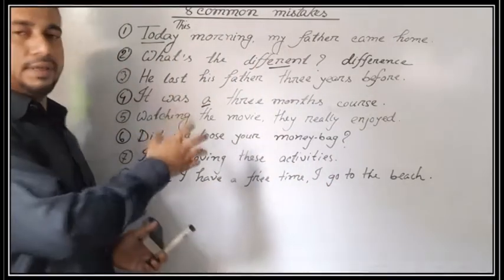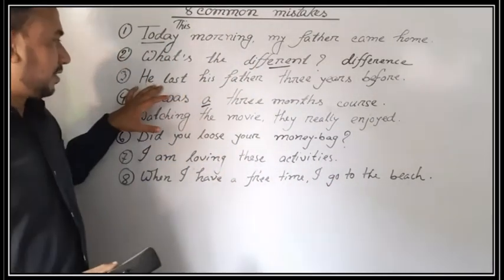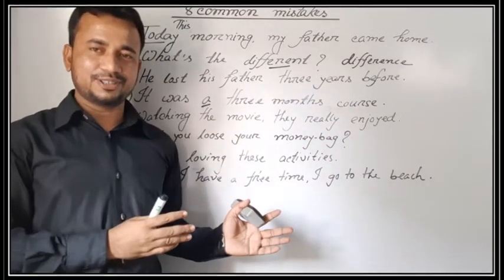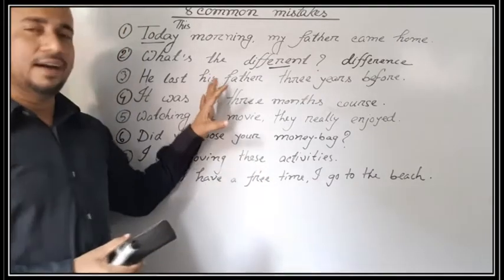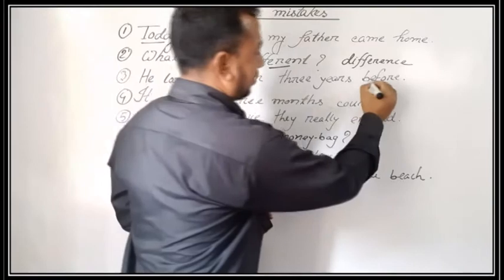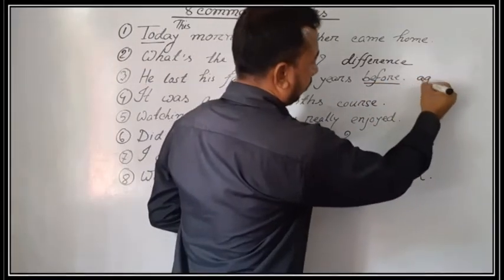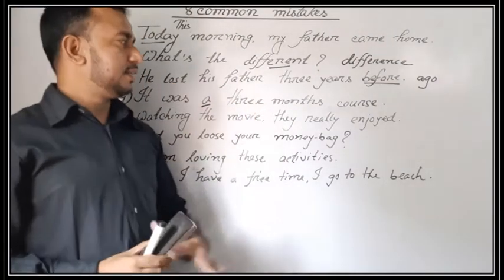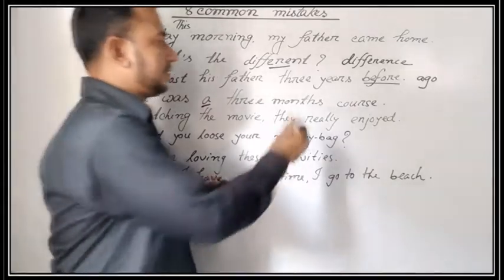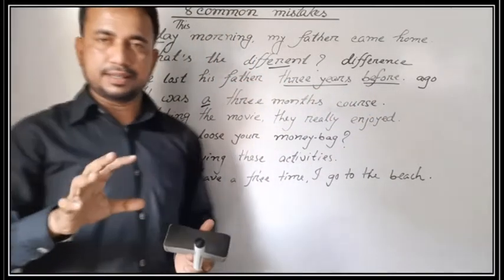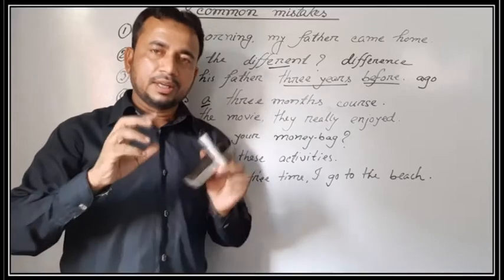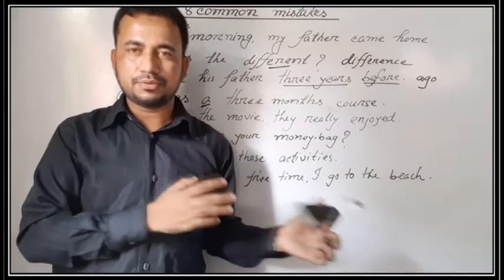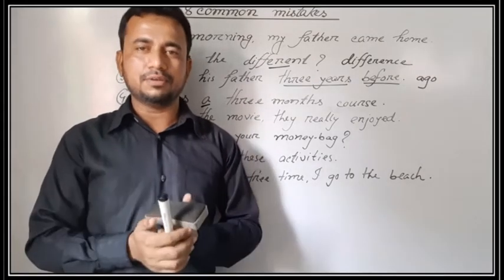Look at the next sentence: 'He lost his father three years before.' Is it also wrong? Yes, it is also a wrong sentence, and the wrong is 'before' — it will be 'ago.' 'He lost his father three years ago.' Three years is a time, and for time it will be 'ago' — five minutes ago, three years ago, long long ago, many years ago.